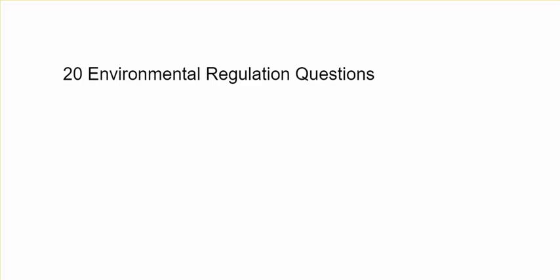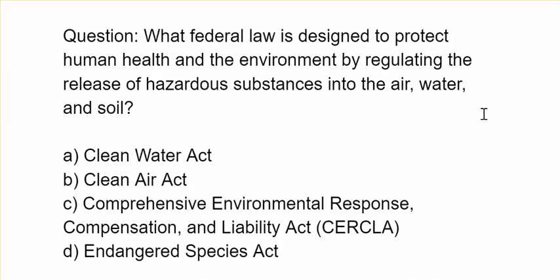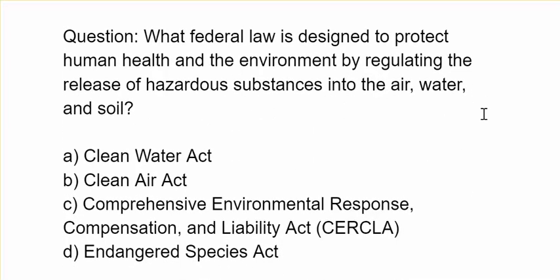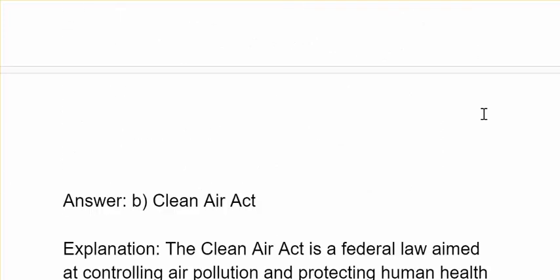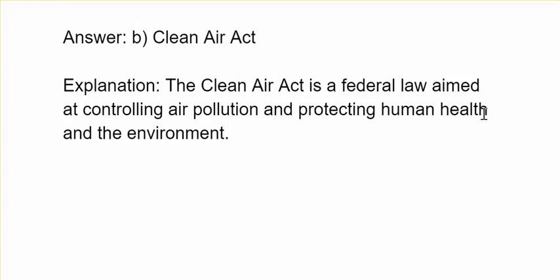All right, here we go — 20 environmental regulation questions. Question 1: What federal law is designed to protect human health and the environment by regulating the release of hazardous substances into the air, water, and soil? A. Clean Water Act, B. Clean Air Act, C. Comprehensive Environmental Response Compensation and Liability Act, D. Endangered Species Act. Answer: B. Clean Air Act. The Clean Air Act is a federal law aimed at controlling air pollution and protecting human health and the environment.